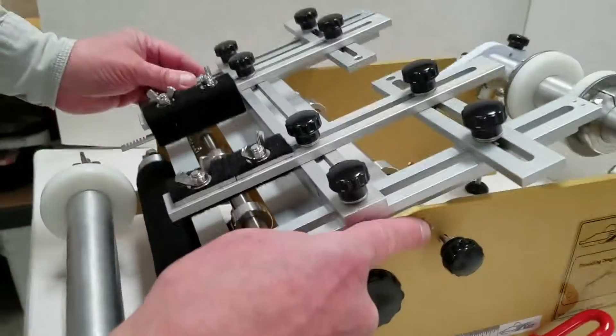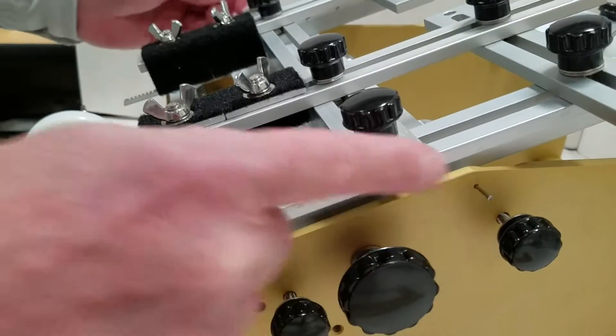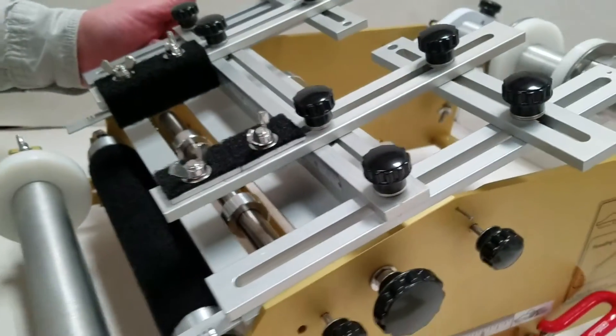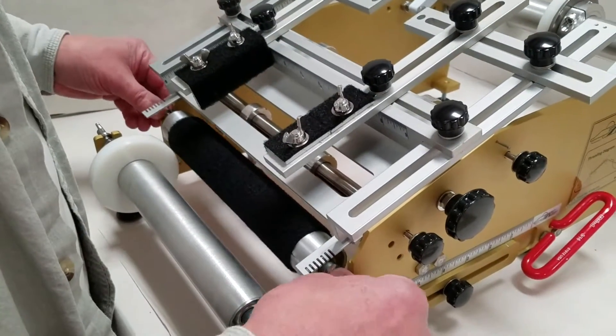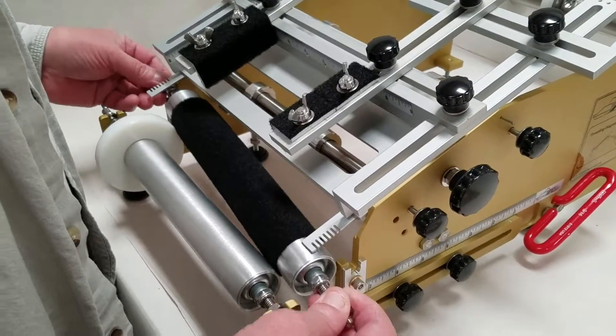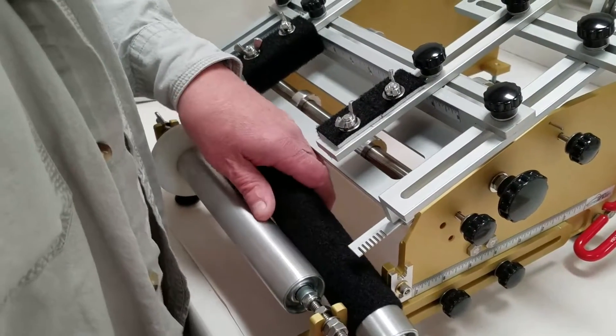You've got a small pin here and you've got one on the other side. Now you need to remove the black roller out of the machine.